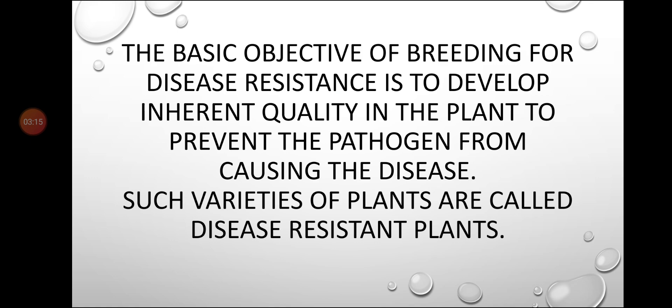The basic objective of breeding for disease resistance is to develop the inherent quality in the plant to prevent pathogens from causing disease. Disease causes a loss in the growth of the plant. By using plant breeding techniques, we develop good qualities in the plant to prevent it from pathogens. Such varieties are called disease resistant plants.